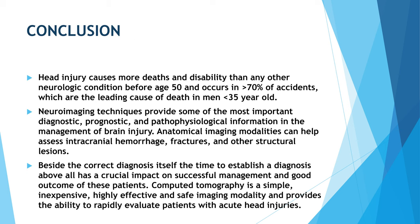Conclusion. Head injury causes more deaths and disability than any other neurologic condition before the age of 50 and occurs in more than 70% of accidents, which are the leading cause of death in men less than 35 years of age. Neuroimaging techniques provide some of the most important diagnostic, prognostic, and pathophysiological information in the management of brain injury. Anatomical imaging modalities can help assess intracranial hemorrhage, fracture, and other structural lesions. Besides the correct diagnosis itself, the time to establish a diagnosis has a crucial impact on successful management and good outcome.